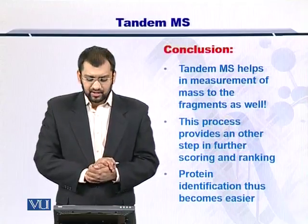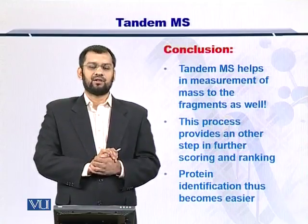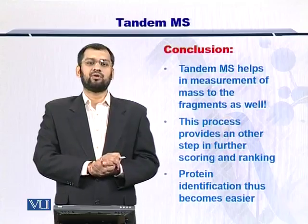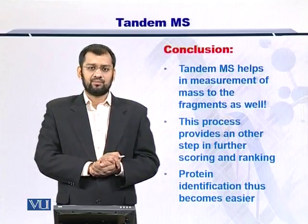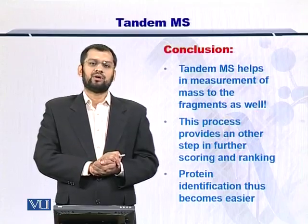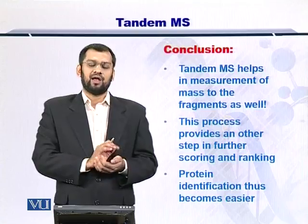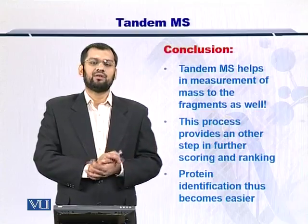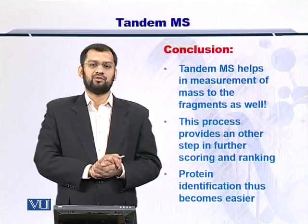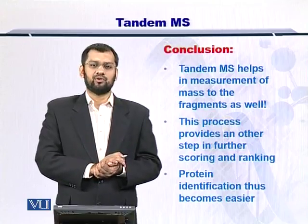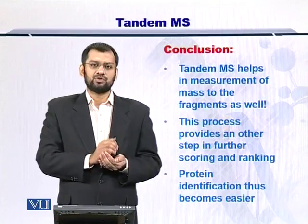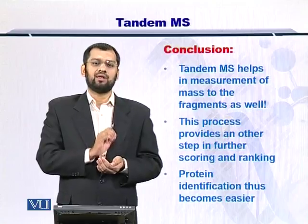To conclude, tandem MS helps you measure the molecular weight of peptides resulting from the fragmentation of your intact protein or peptide. This step enables better identification of proteins that were not accurately identified through the MS1 step alone, and becomes very useful if your protein has multiple homologues — allowing you to identify specifically which homologue is present in the sample.